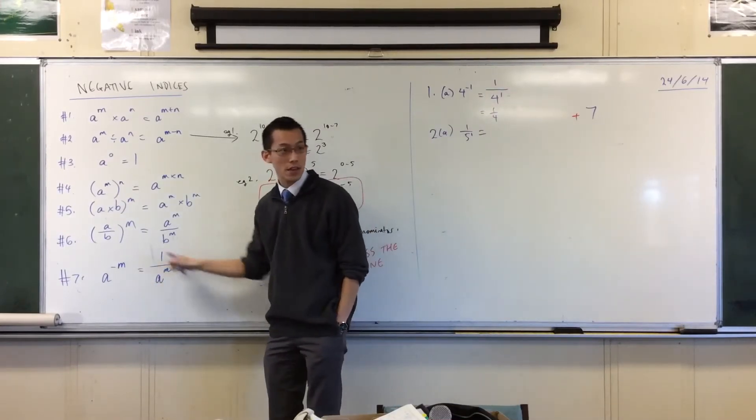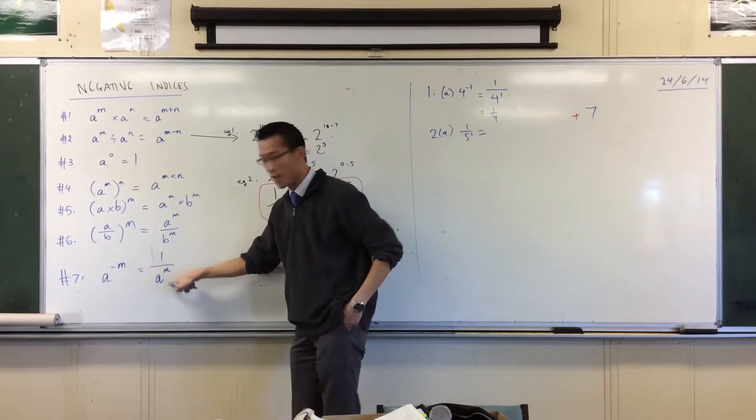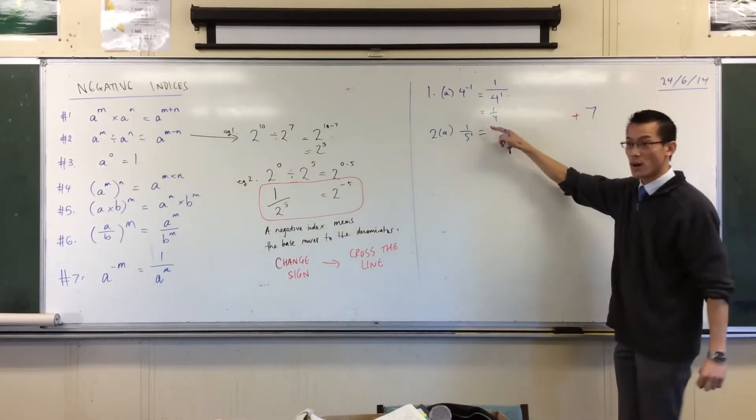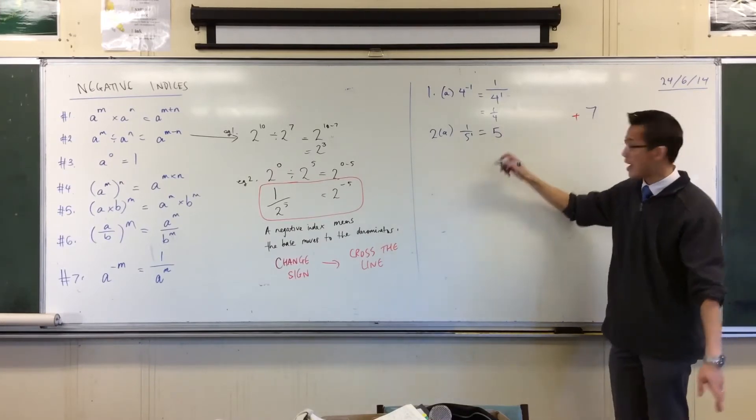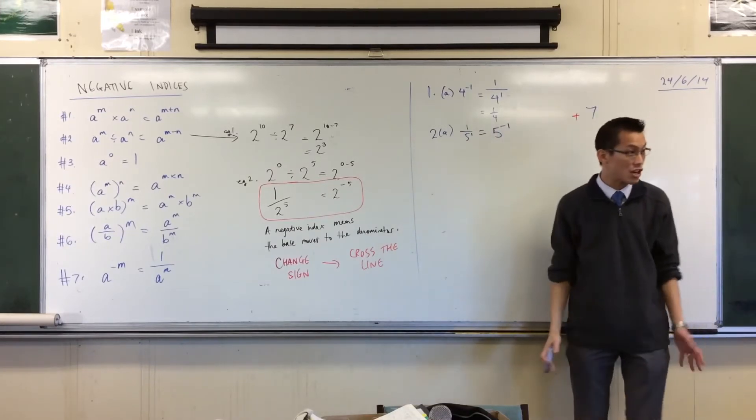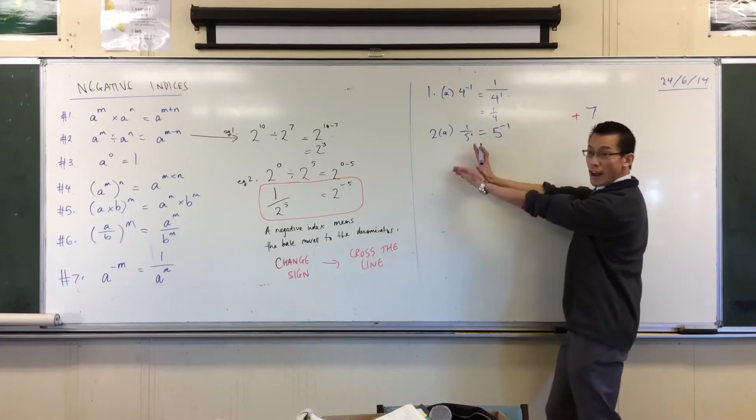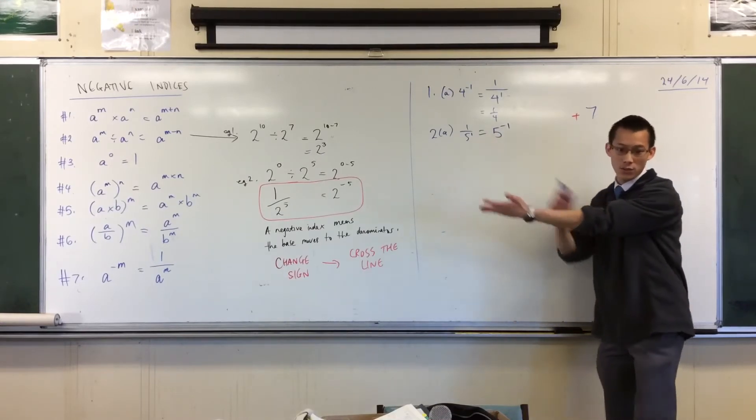I'm in this case over here. I've got 1 over 5 to the 1, so I'm going to cross the line. Now I'm on the numerator, and I'm going to change the sign. There you go. There's the fractional form, there's the negative index form.